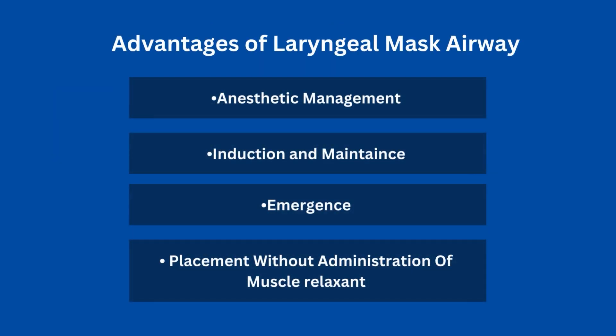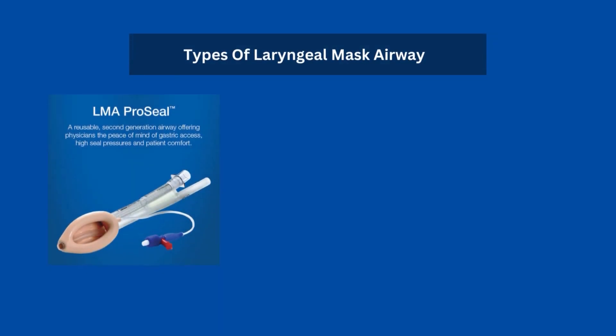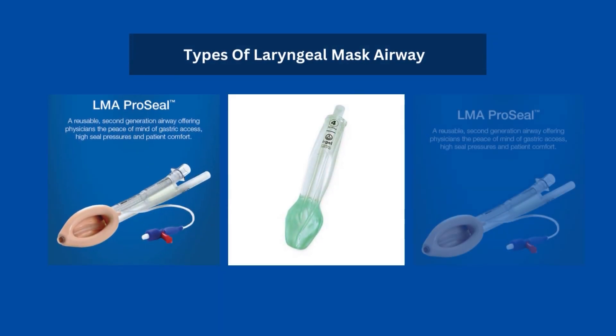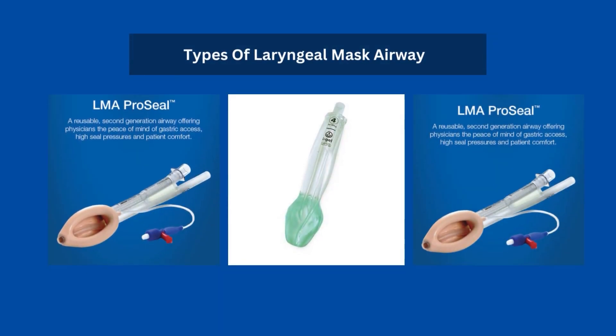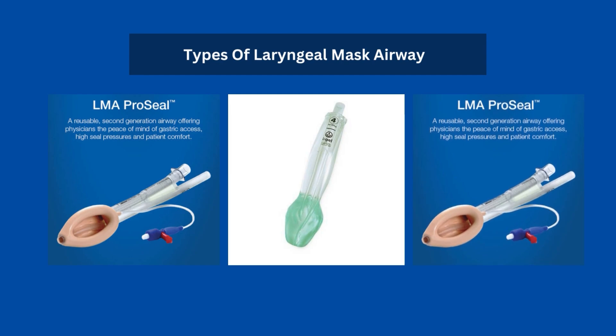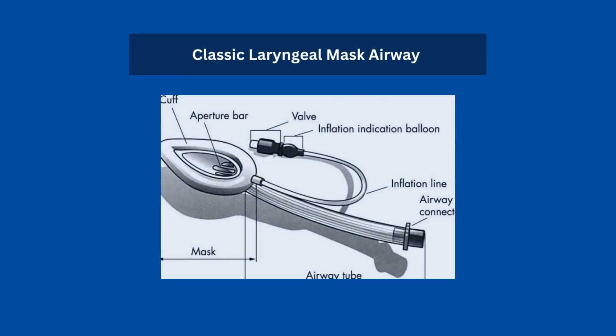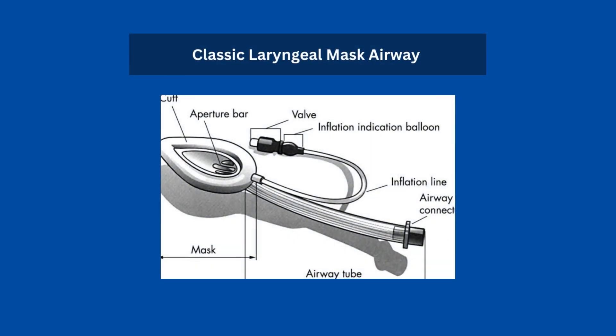The advantages of LMAs include anesthetic management — induction, maintenance, and emergence. The placement of LMAs can be accomplished without muscle relaxant and laryngoscopy, and insertion is easier than an endotracheal tube. We generally have different types of LMAs; while they all share similar characteristics, there are minor design differences. In the classic LMA, we have a cuff at its tip, an airway tube, connector, and valve for inflating the cuff.